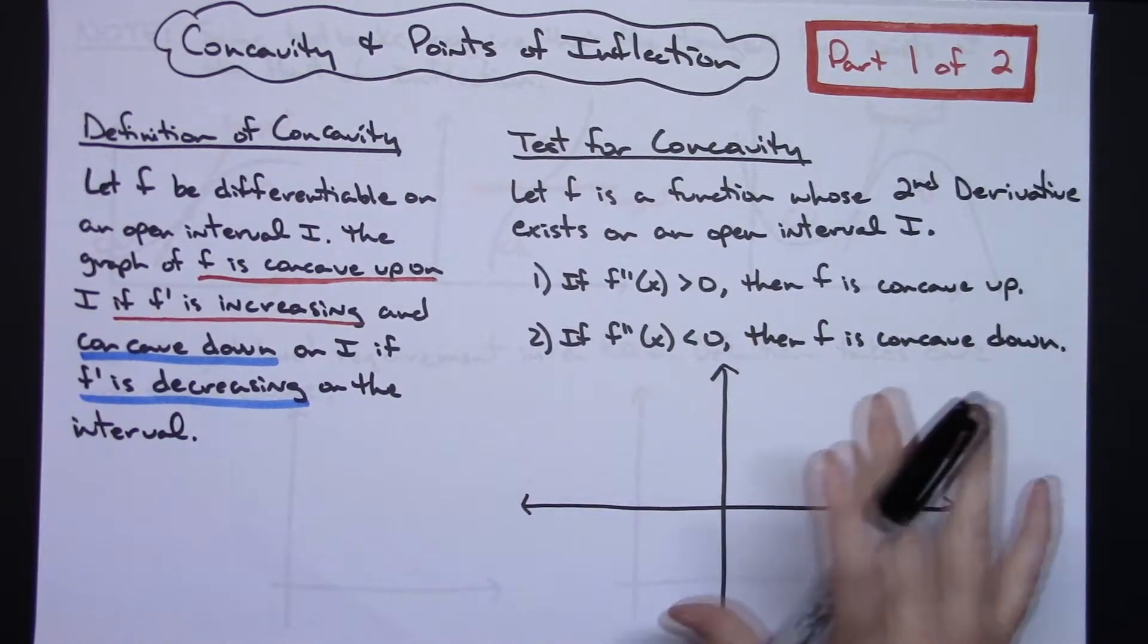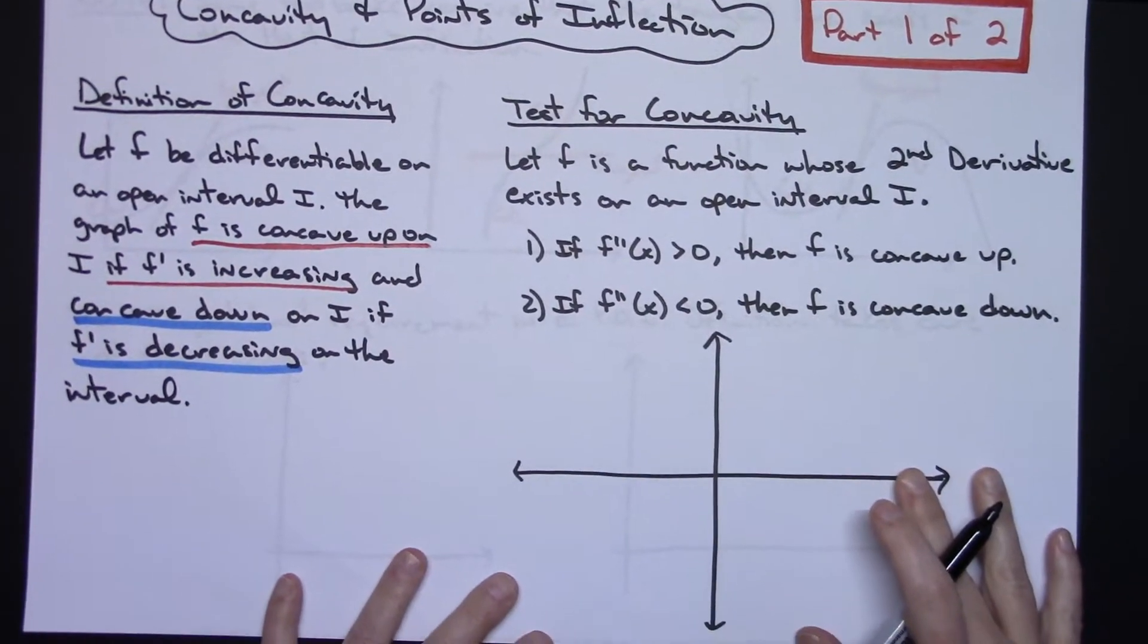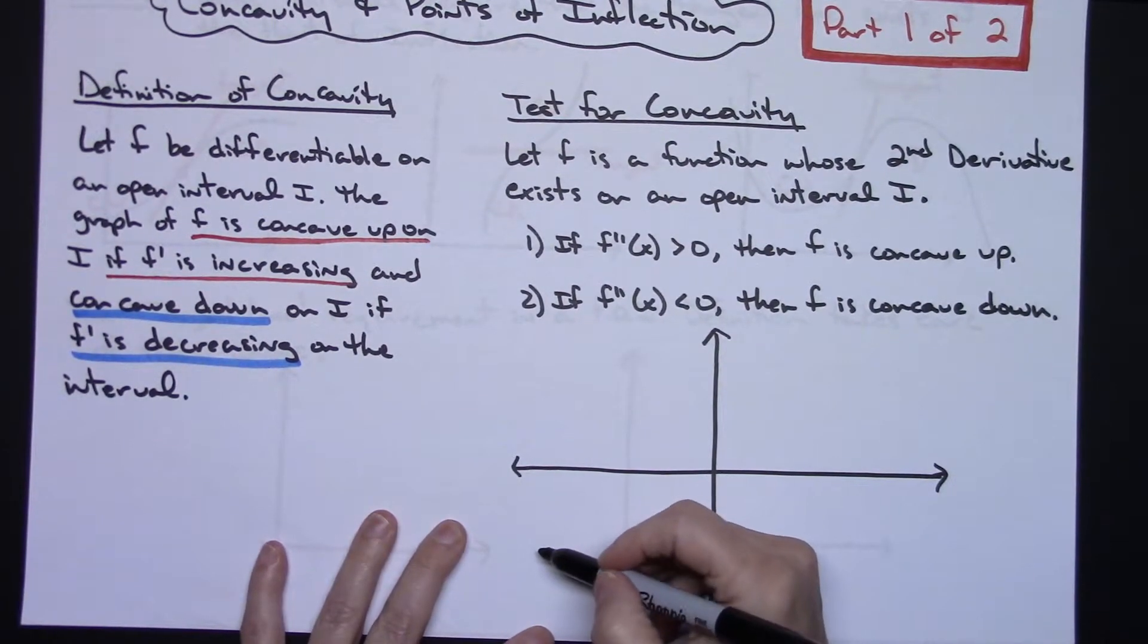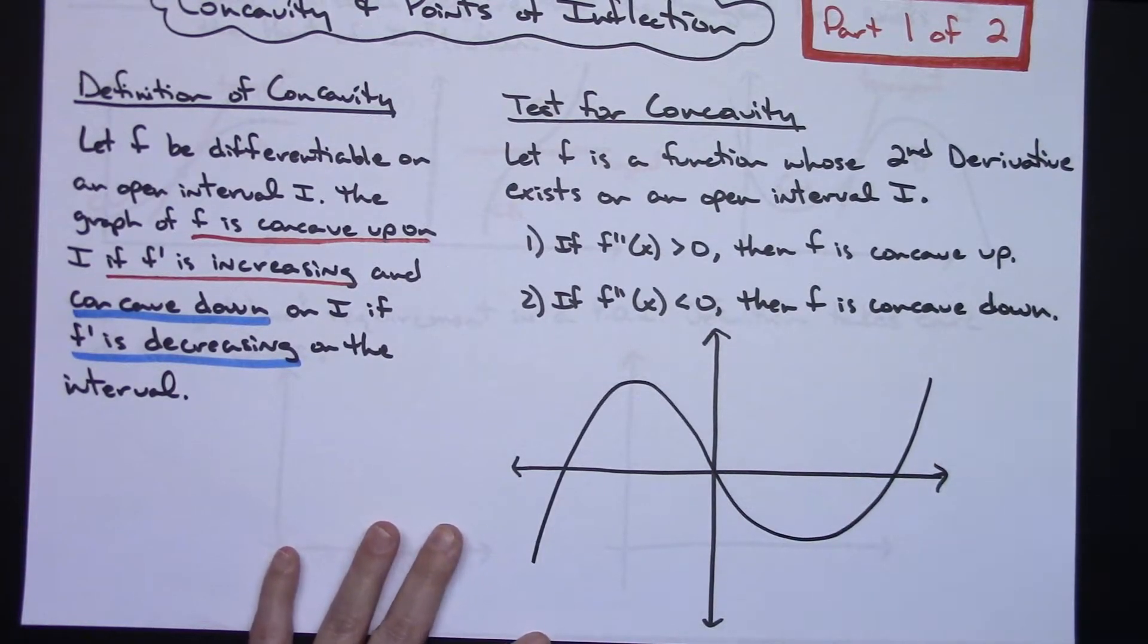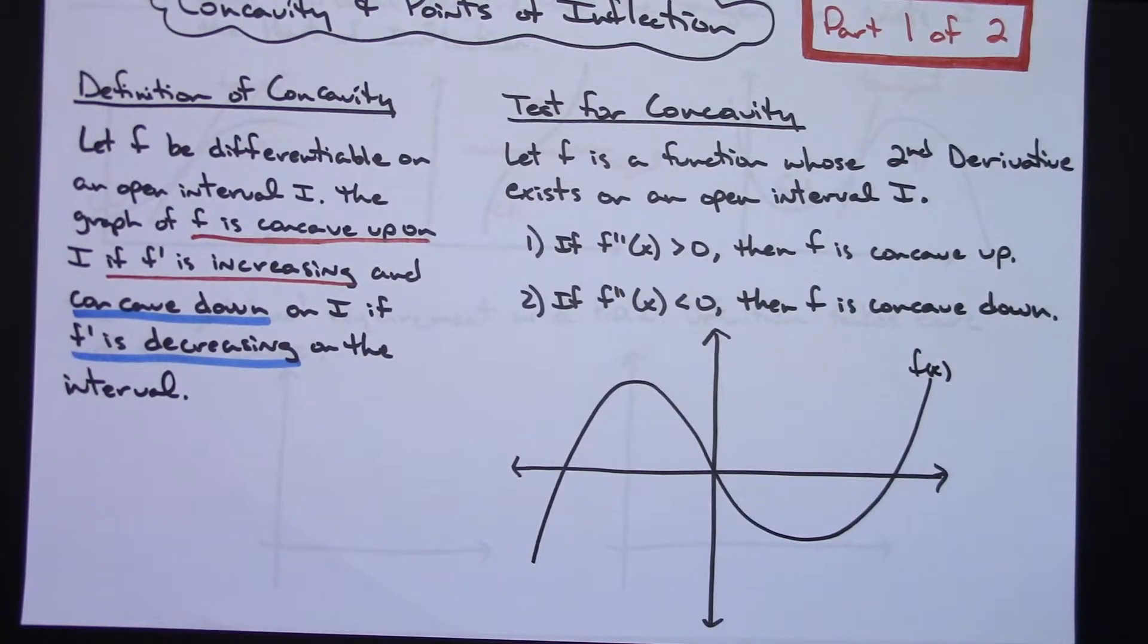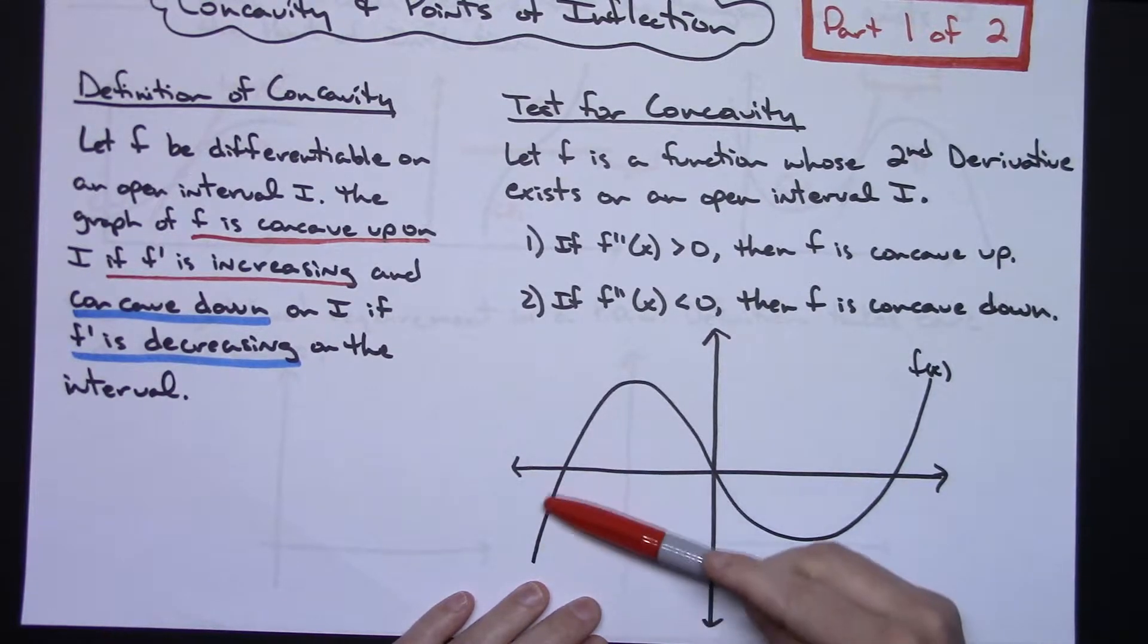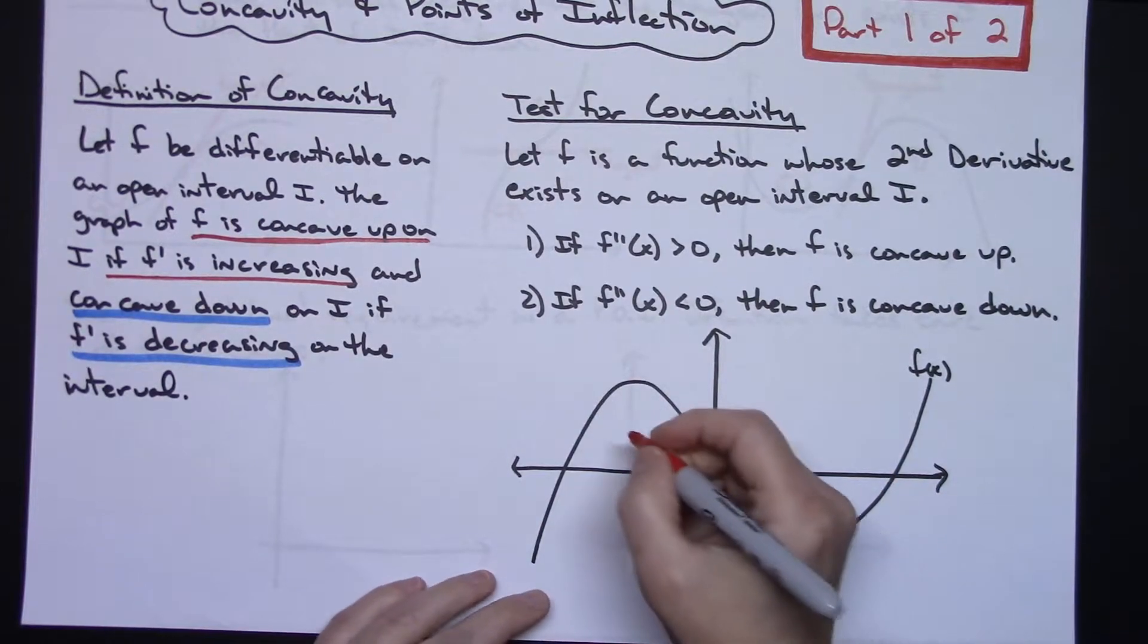Now this whole concave down, concave up thing, just to give you an idea of about what this is going to look like. Let's suppose I've got some random polynomial curve, maybe like that. That's my F of X curve. Now what this is, is this is going to tell us what concave up and concave down is. Think of this area right in here being concave down because it's kind of trapping things in a downward motion. So here's your concave down area.